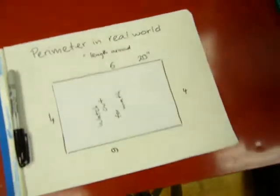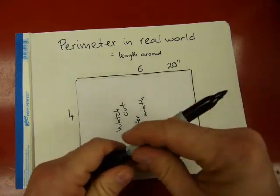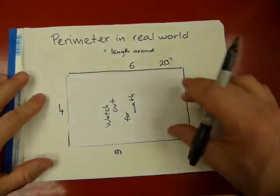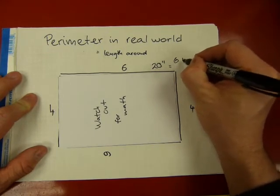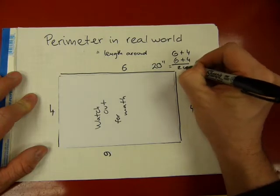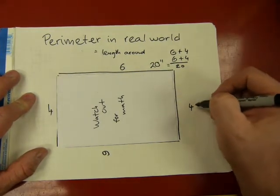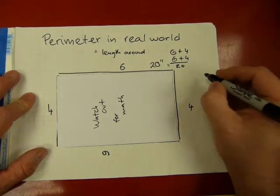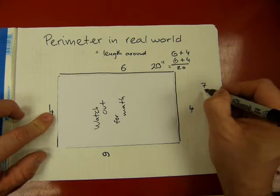So instead of 20 inches, we're going to have - well, 20 was six plus four and six plus four, that was 20. Instead of that, now we have four plus one and a half plus one and a half, so that's seven. Seven plus another seven on the other side, that's also seven being replaced.